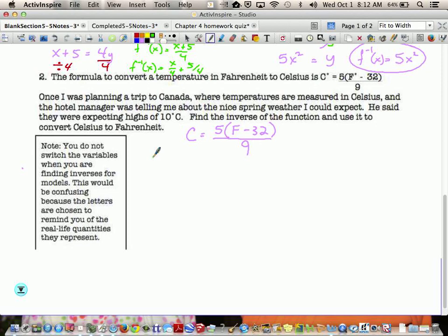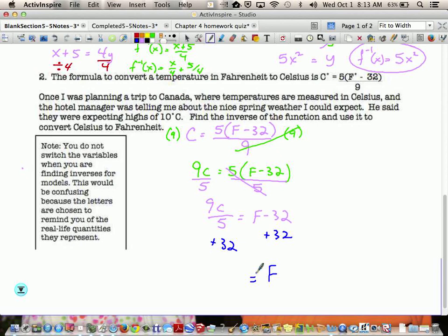What's the first thing we should do? We'll multiply by 9. Now, I know a lot of you like to take that 5 and distribute. You're so ingrained in distributing the 5 through, but it's multiplication, right? So let's just divide by 5 to get rid of it rather than multiply it. So now you have 9C over 5 equals F minus 32. Last step. Add 32. So what we end up with is F equals 9 fifths C plus 32.